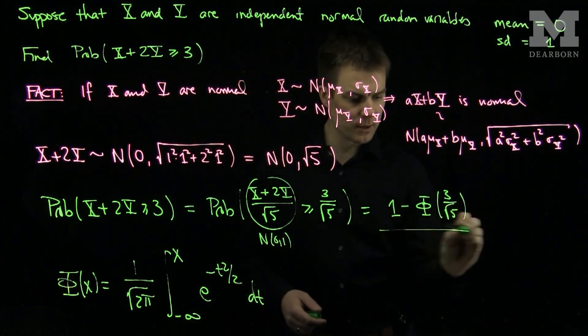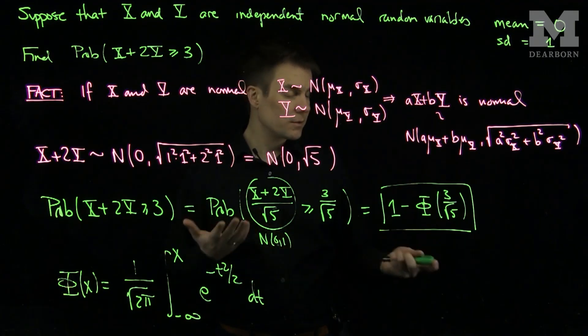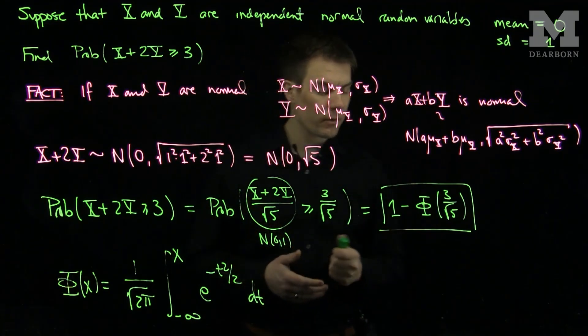And so this over here is our final answer, and this can be tabulated from a normal random variable CDF table, or from a computer, or from a calculator.